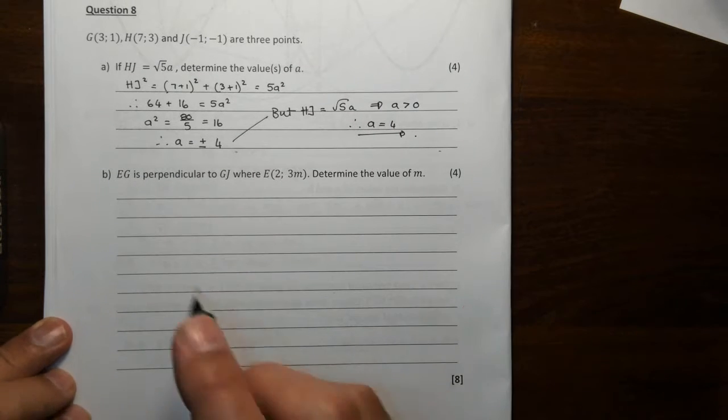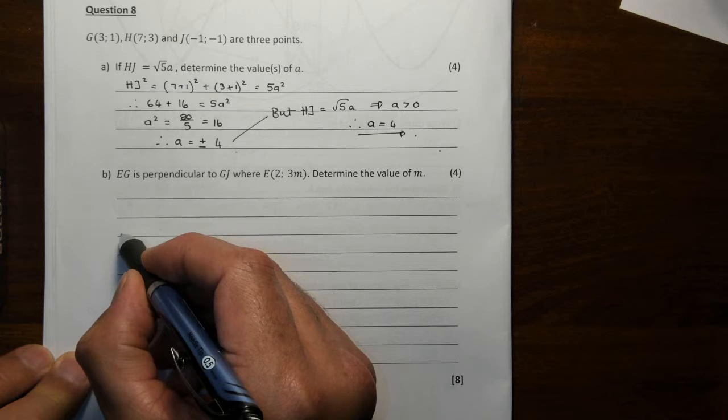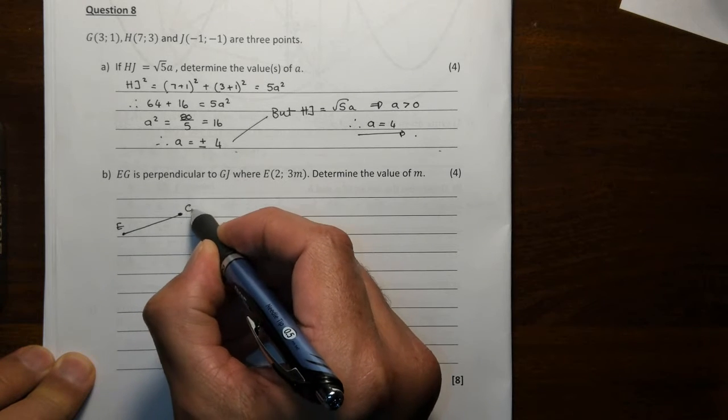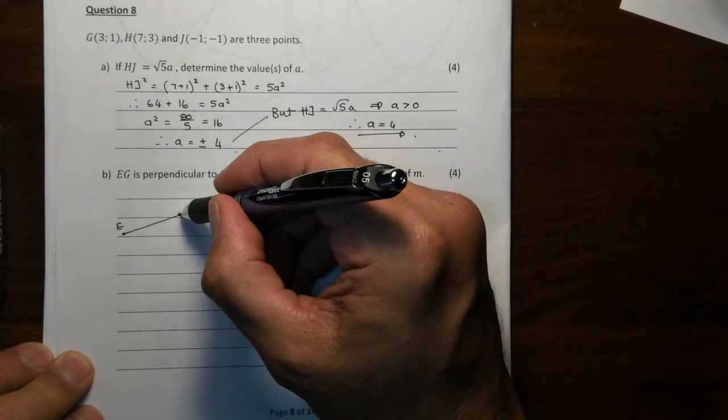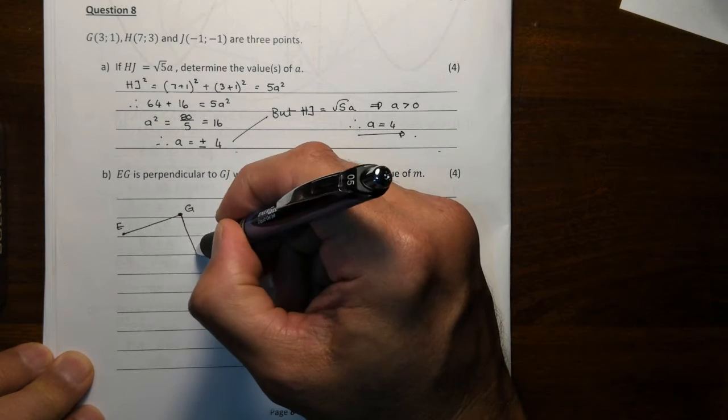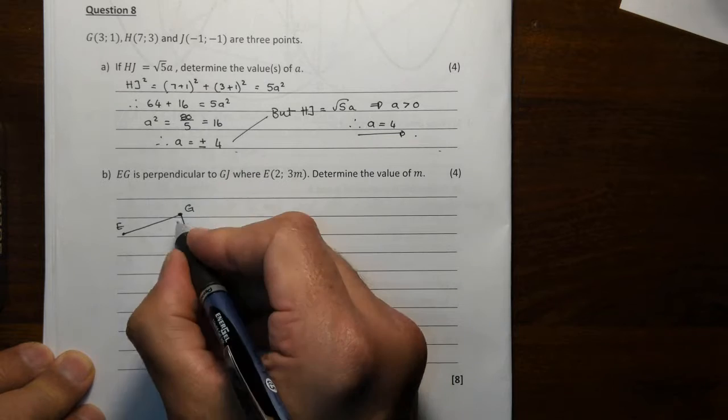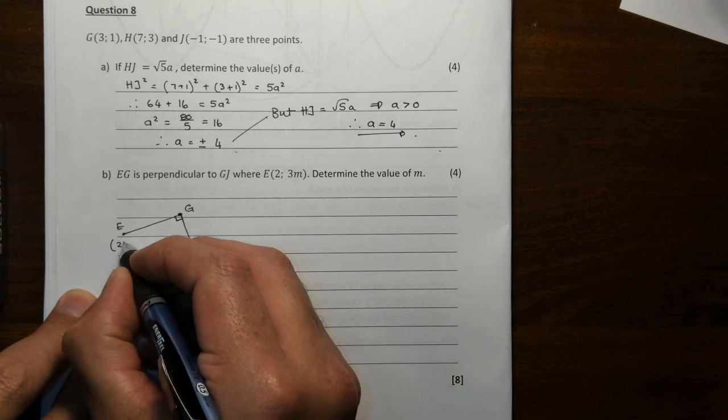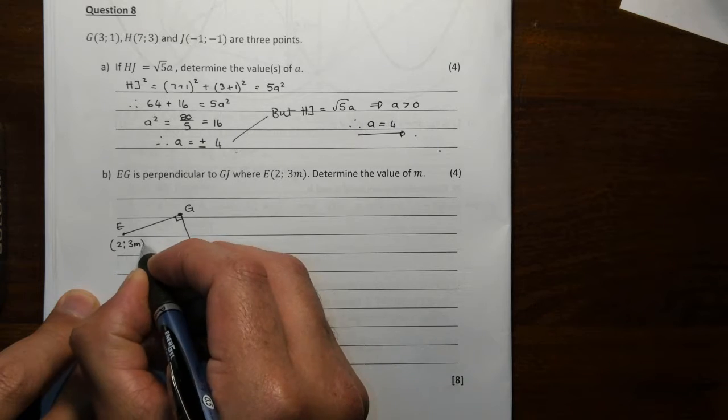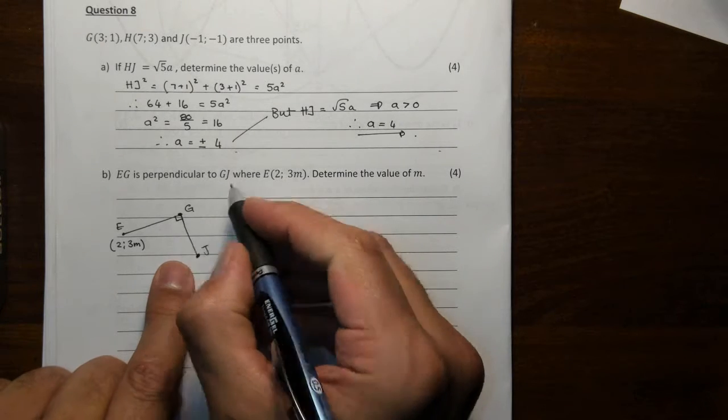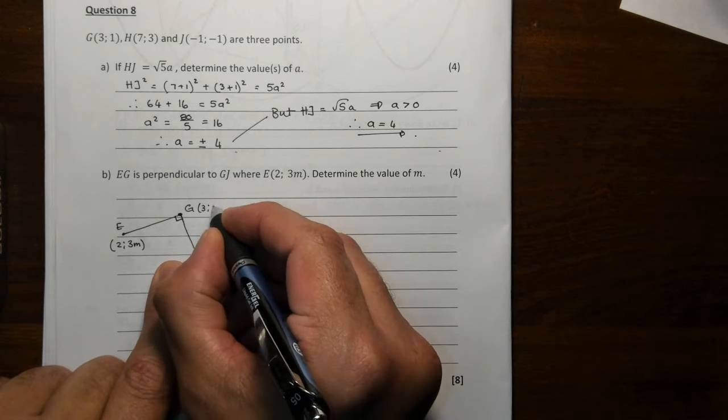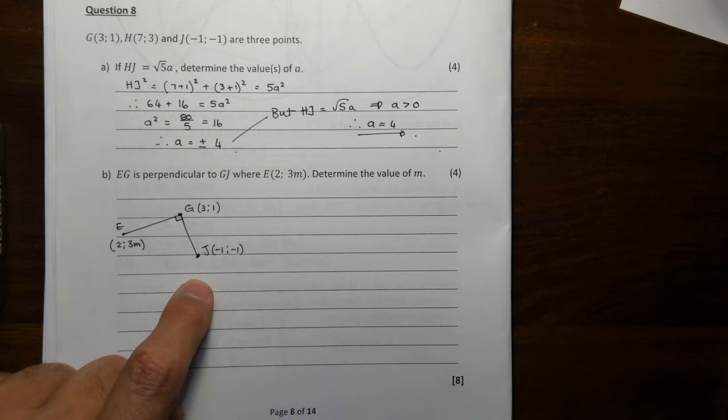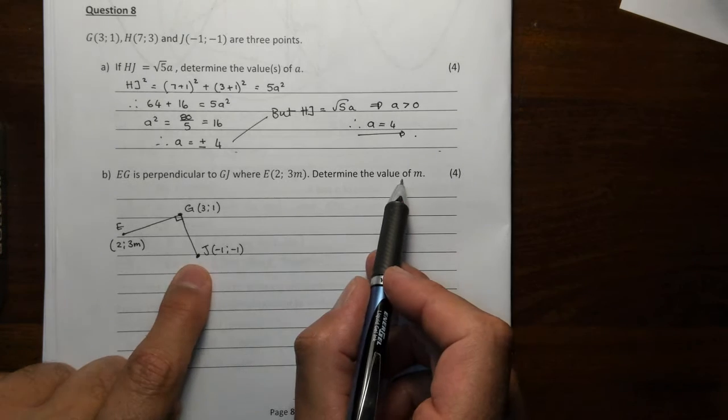Now, EG is perpendicular to GA. Let's draw that. EG, I'm drawing any line, is perpendicular to DGJ. The common point that is shared is G, so those are perpendicular. E is the point 2 and 3M, G is the point 3 and 1, it was given as that, and J is minus 1 and minus 1. Now, with that there, determine the value of M.